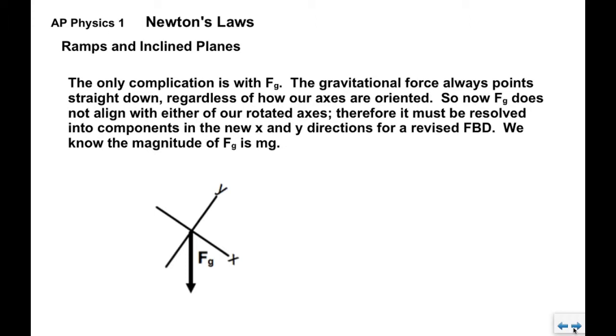Now there is one complication and that is with FG. The gravitational force always points straight down regardless of how we orient our axes. So now F sub G does not align with either of our rotated axes. So it must be resolved into components in the new x and y-directions for a revised free body diagram. You can see by looking here, FG has a component in the x-direction and a component in the y-direction. So again we know that its magnitude is MG but now we're going to need to resolve it into components.